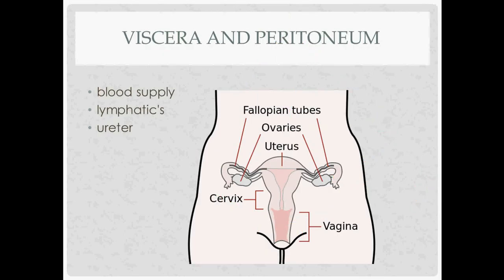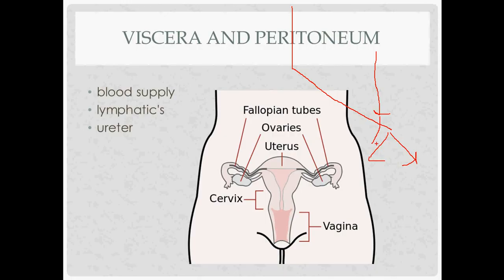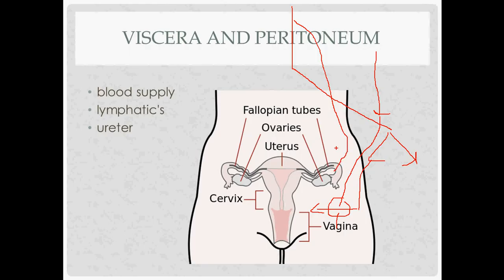Knowing where the ureter goes is important — this is the 'water under the bridge' concept. The ureter comes down from the kidney and passes over the common iliacs near where they divide into internal and external branches. Then, as the anterior division of the internal iliac gives off the uterine artery, the ureter passes underneath it — that's the water under the bridge. The ovarian blood supply travels in the infundibulopelvic ligament, and the ureter is also deep to that.